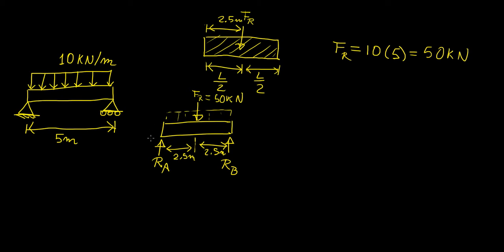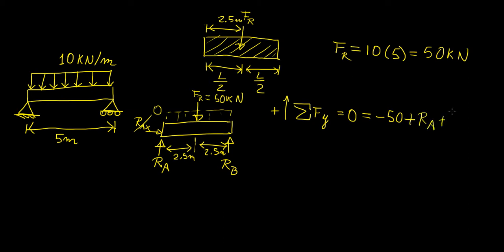Since this is a hinge support on the left, we would normally have an x-component for the reaction at A, but since there are no other horizontal forces acting on the system, this is immediately zero. We can solve this system by simply summing the forces in the y-direction, equal to zero. We have 50 kilonewtons going down and Ra and Rb going up, which means Ra plus Rb equals 50 kilonewtons.